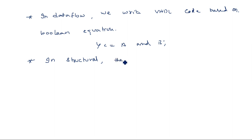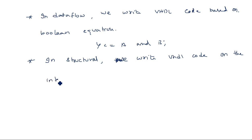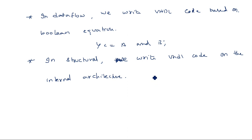In the structural model, we write the VHDL code based on the internal architecture. We write code for individual component architectures and later combine all the individual programs using a method called 'port map'.